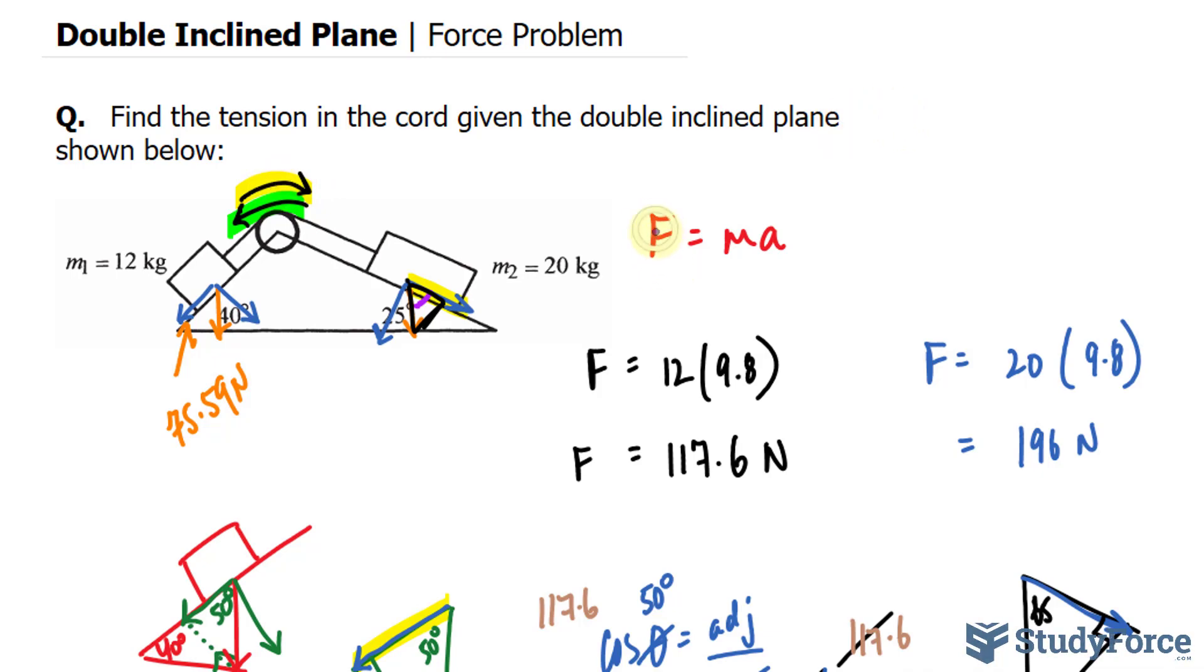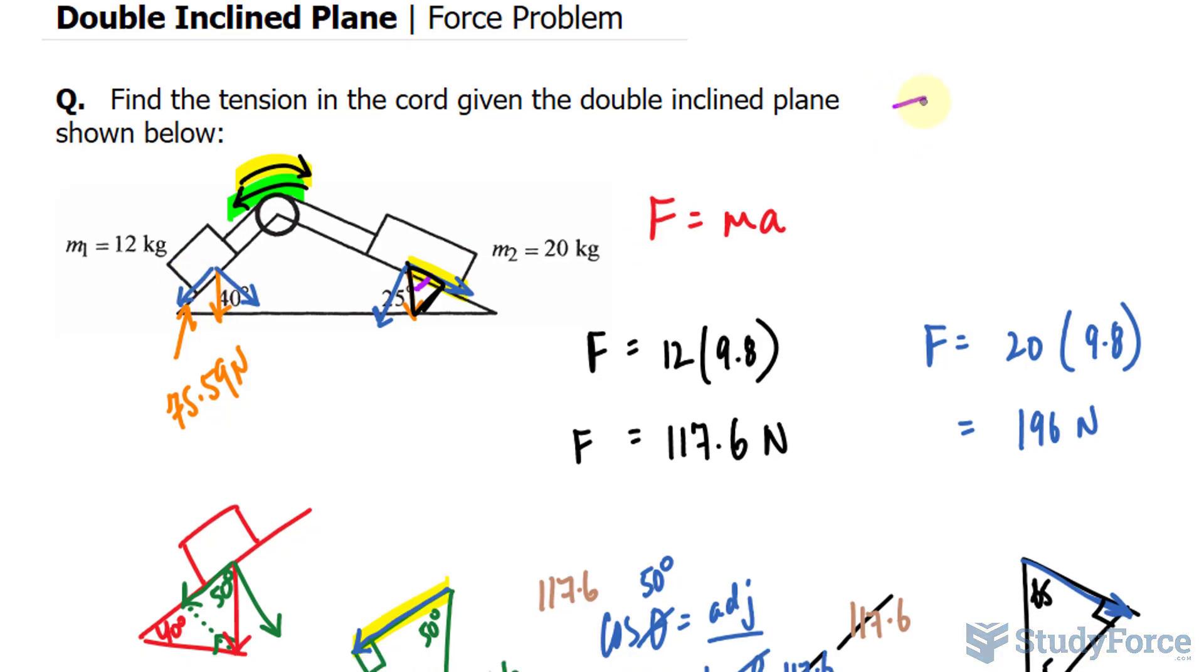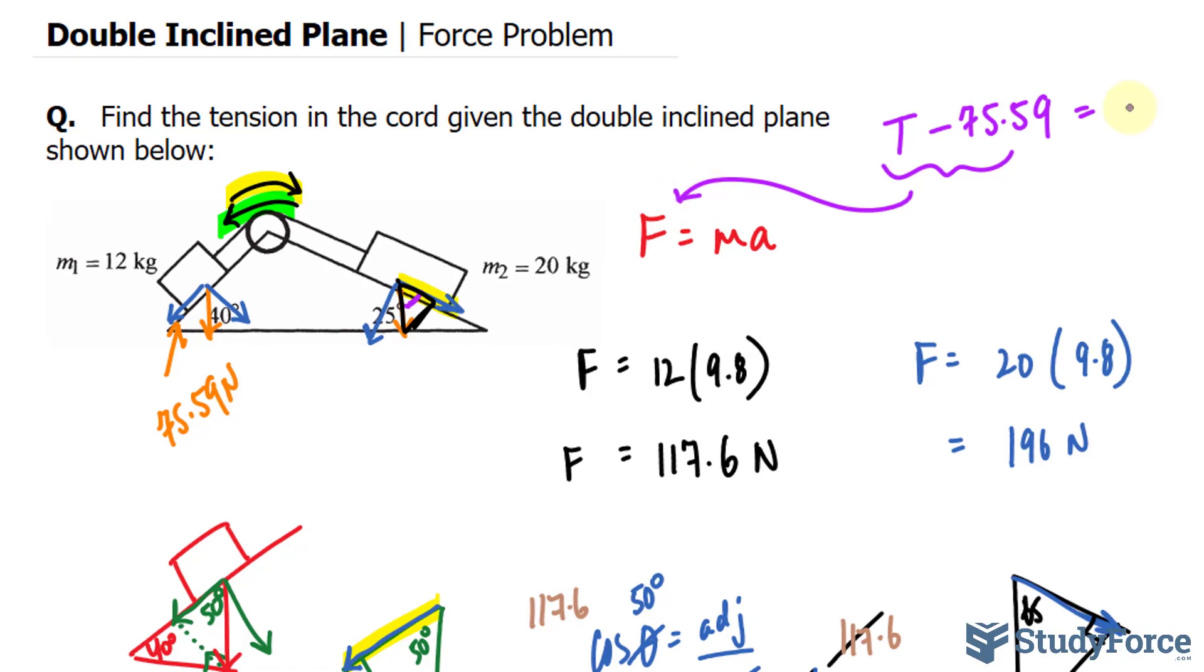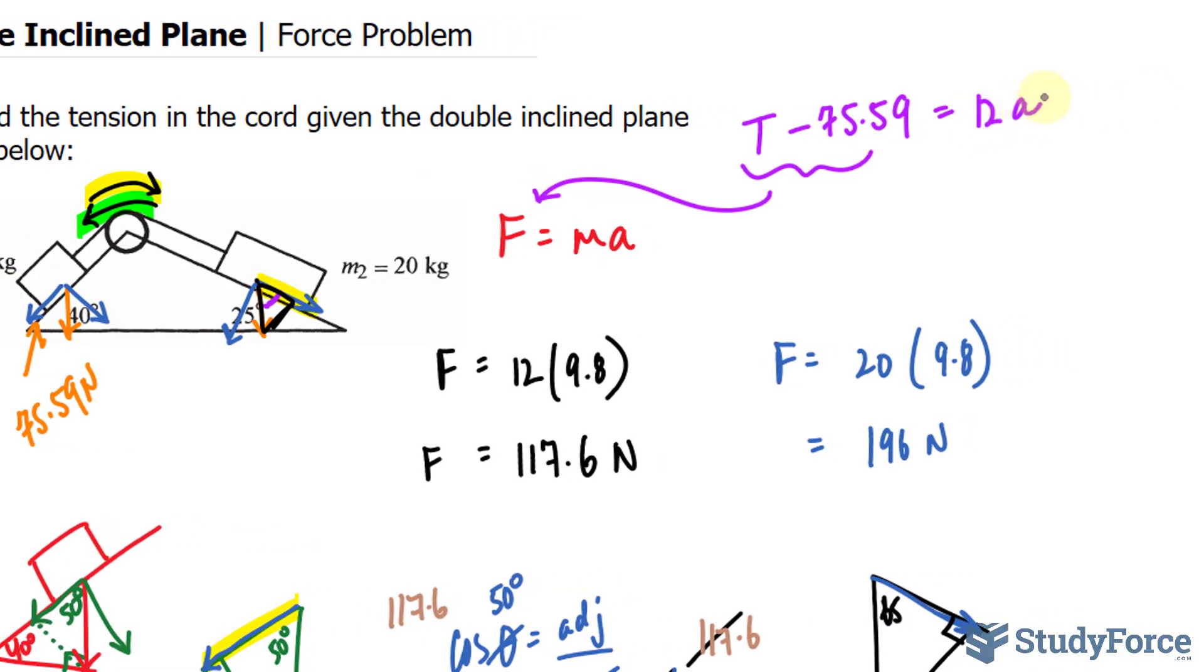If it's going clockwise, and remember, force is equal to the mass times acceleration, I'll say that tension minus 75.59, remember this represents the force, is equal to the mass of 12 times the acceleration.